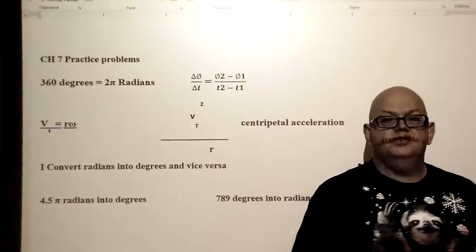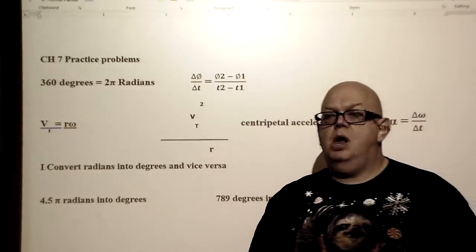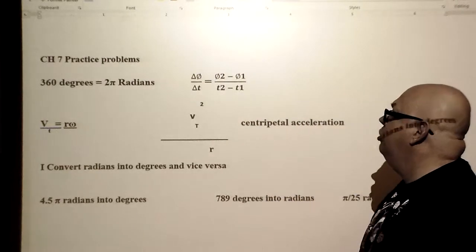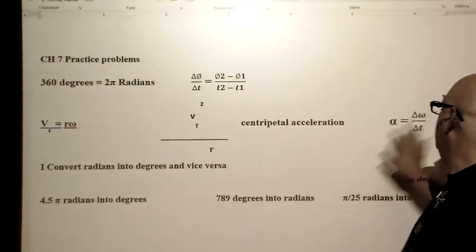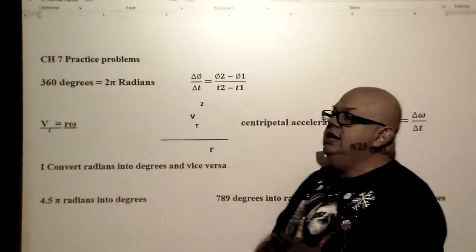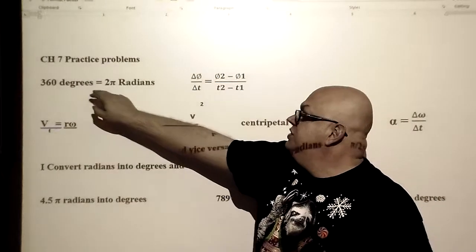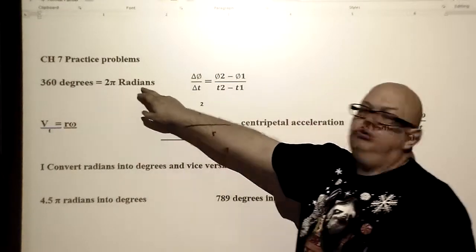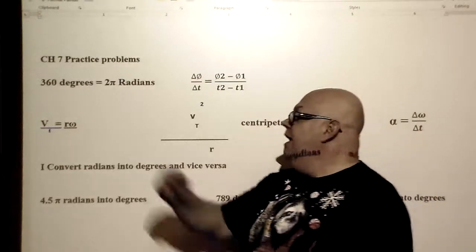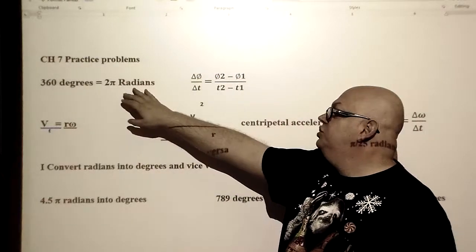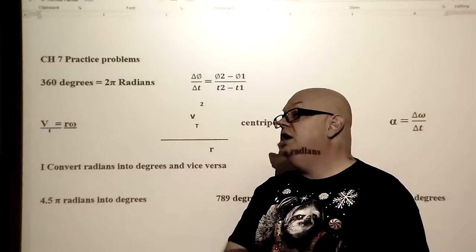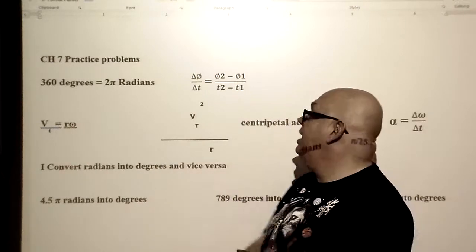This is for the Chapter 7a practice problems on circular motion. I have a bunch of formulas here. Very quickly: 360 degrees equals 2 pi radians — it doesn't matter the radius of the circle. If 360 degrees is equal to 2 pi radians, it is also true that 180 degrees is equal to pi radians.